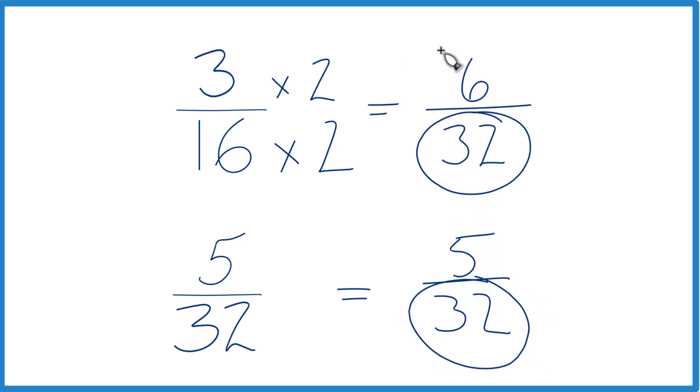Because we have the same denominator, we just compare the numerators. So 6 is larger than 5, so 6/32, that's larger than 5/32. And since these two numbers are the same, 3/16, that's larger than 5/32 as well.